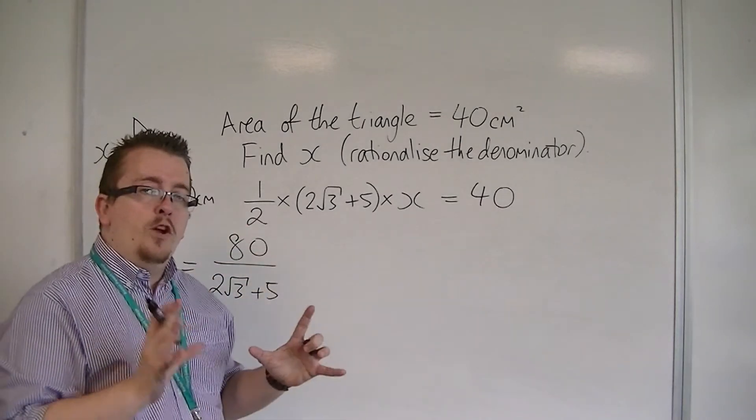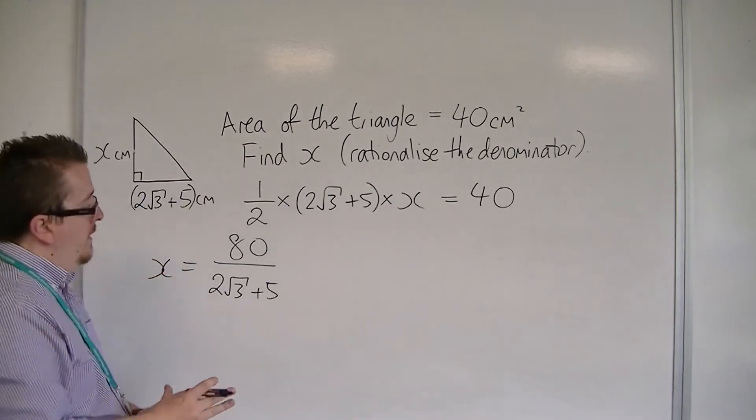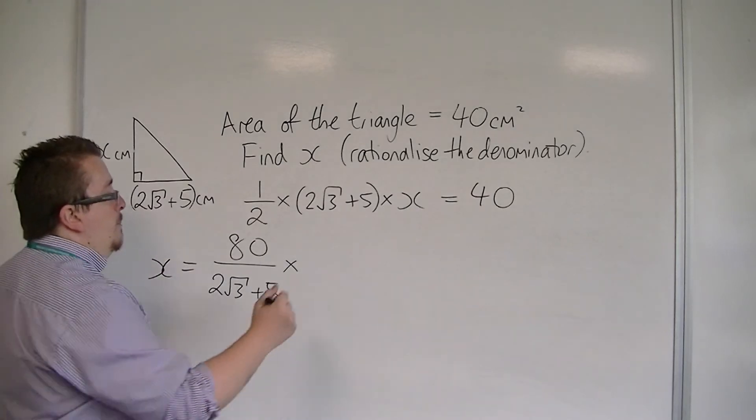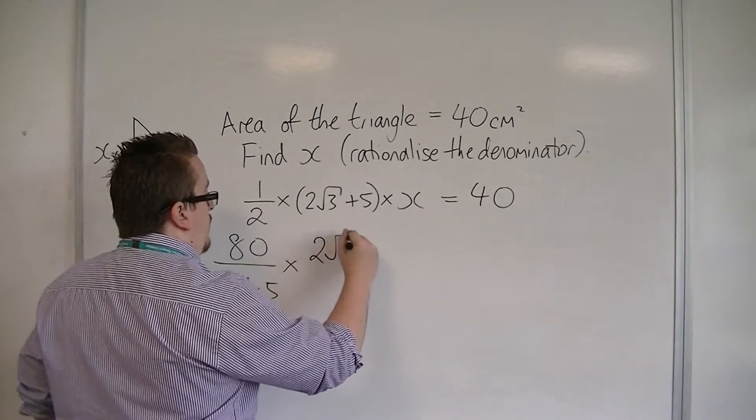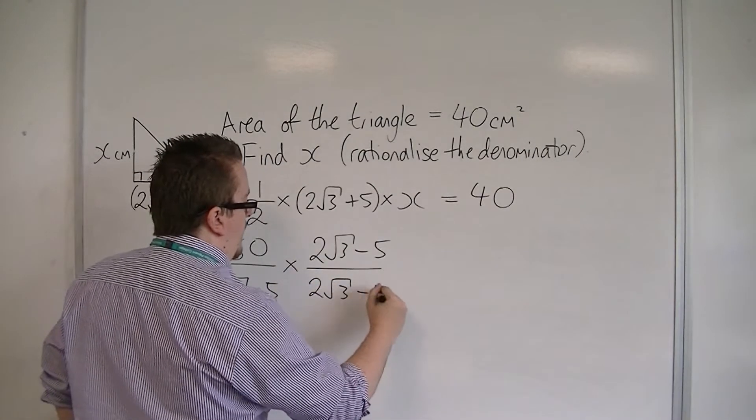That's the value of x, but I don't want it in that format. I want the denominator to be rational. So, I'm going to multiply both top and bottom by 2 root 3 minus 5 over 2 root 3 minus 5.